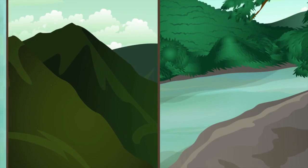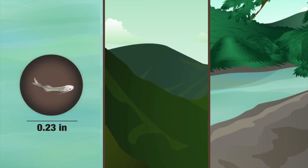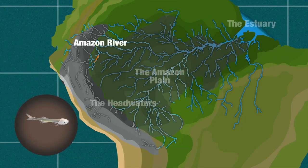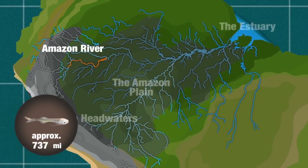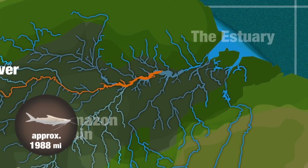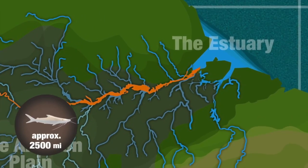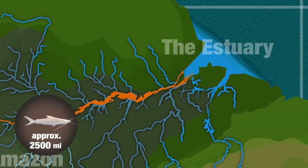When the Dorada is a larva, the current of the rivers originating in the Andes carries it away. As it develops, it crosses the vast Amazon floodplain, reaching juvenile stage by the time it reaches the estuary, where the mouth of the Amazon River flows into the Atlantic Ocean.